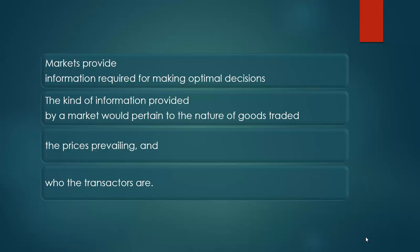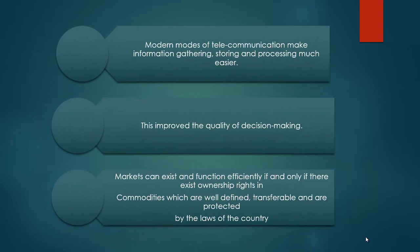In economies where markets do not exist, resources cannot be used efficiently. Markets provide information required for making optimal decisions. The kind of information provided by a market would pertain to the nature of goods traded, the prices prevailing, and who the transactors are. No other information is transmitted by the market. Also, information transmitted by markets would be costless, though for many goods one has to spend money, time, and efforts to acquire the relevant market information.